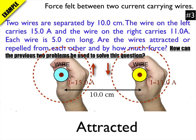So one field goes up, one field goes down, and we know when fields travel in opposite directions, they're attracted to each other. So the first part of the question, I know these two wires are attracted.